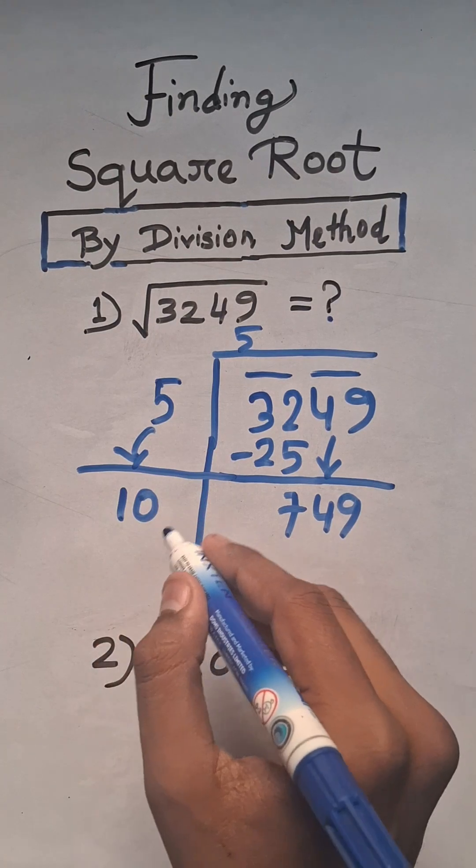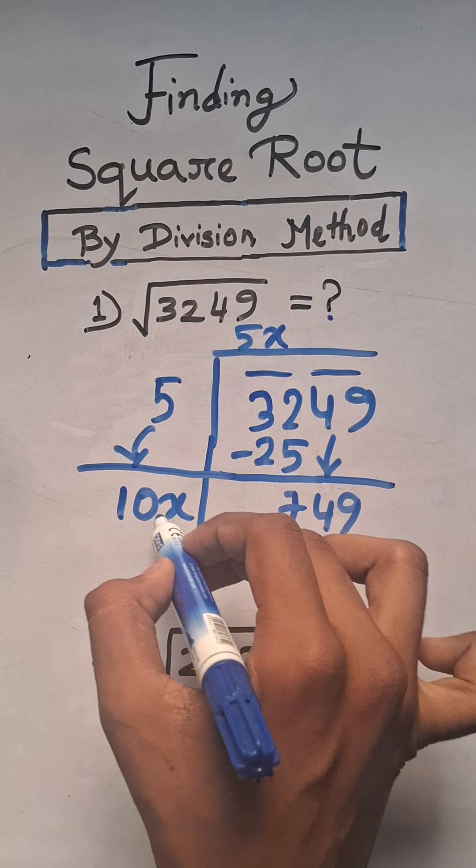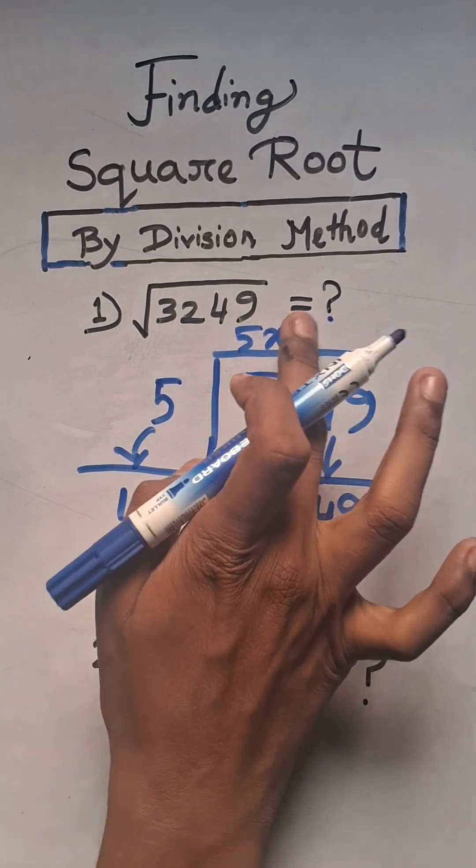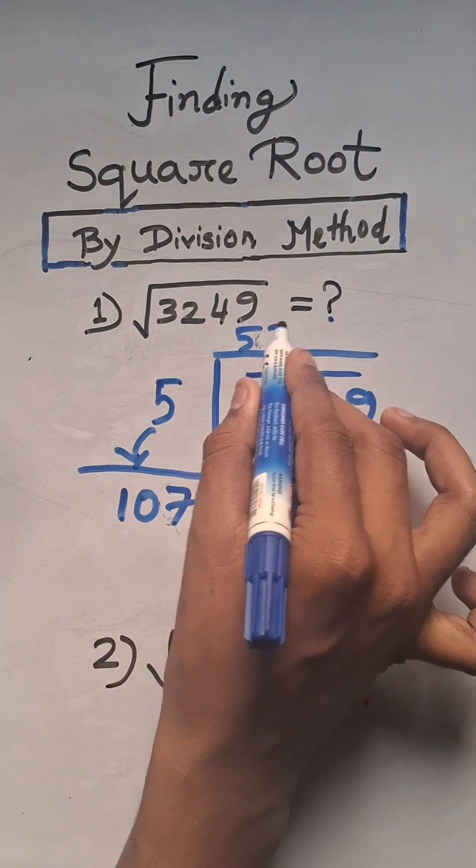find a number and multiply the total number with that number. We get less than or equal to 749. So here the x is 7. If we multiply 7 times 107 we get 749.